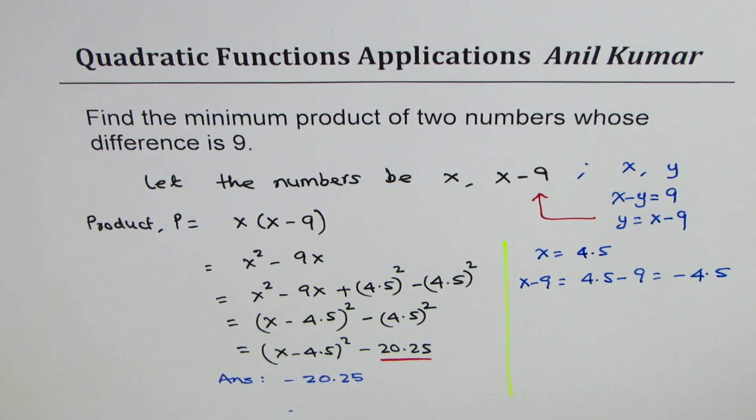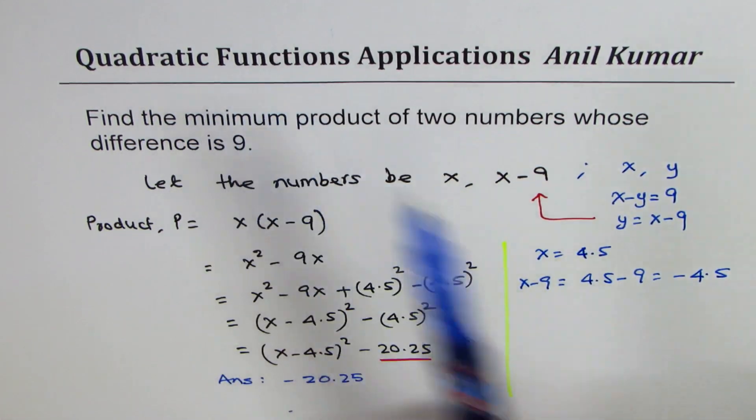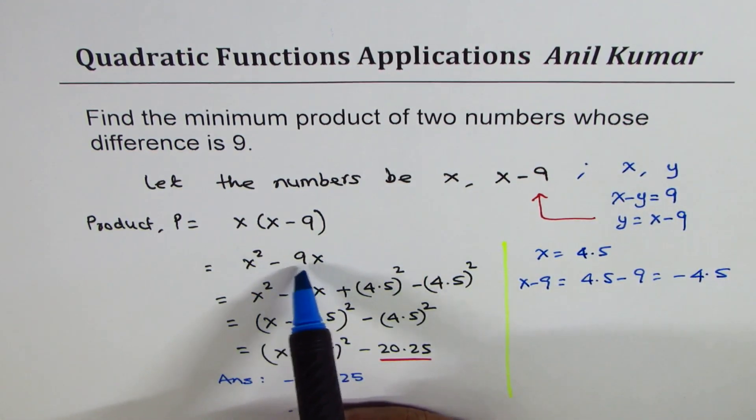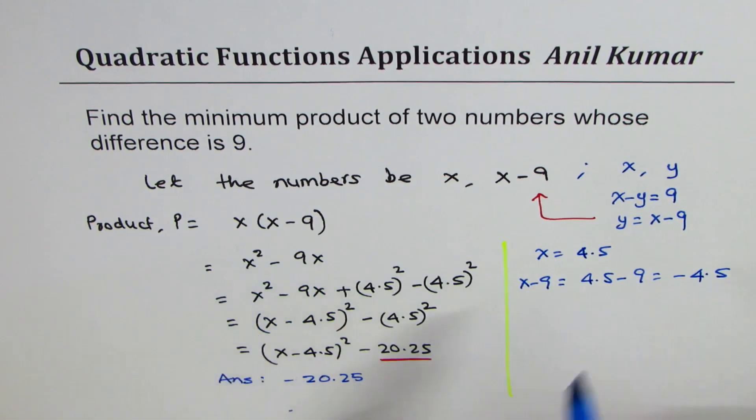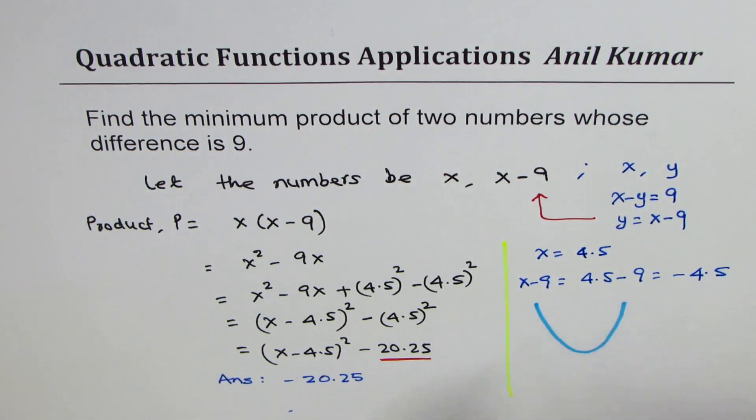Now the question is how do you know this is the minimum product. From the quadratic functions properties, you know that a parabola X square minus 9X where the leading coefficient is positive will be opening upwards. And from the vertex we know that is the point which vertex represents, and this point is at 4.5.